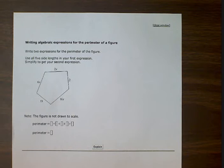Writing algebraic expressions for the perimeter of a figure. Write two expressions for the perimeter of the figure. Use all five side lengths in your first expression. Simplify to get your second expression.